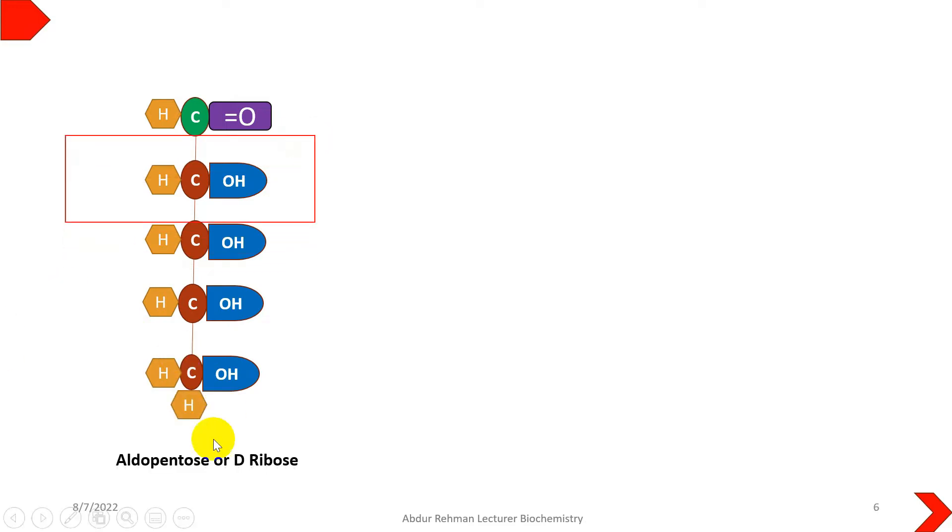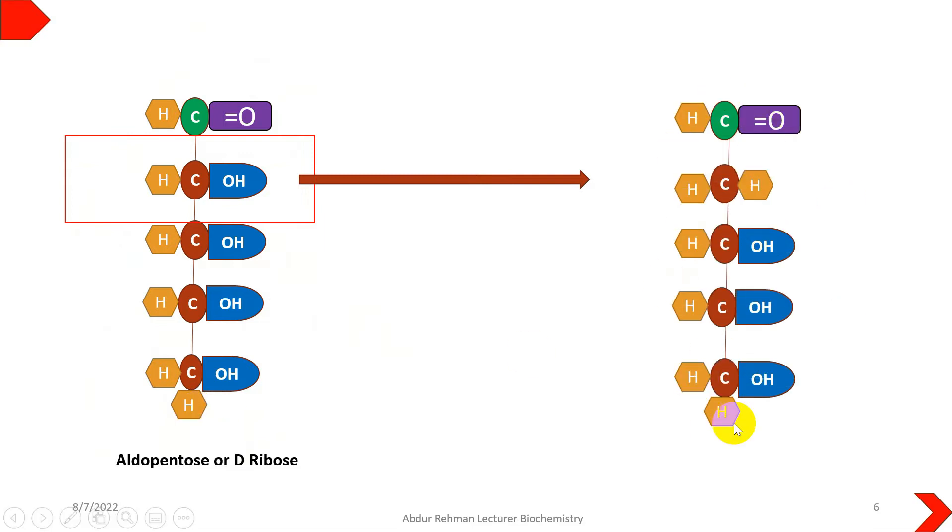It is biologically very significant because ribose is part of RNA structure while deoxyribose is part of DNA structure. You can't ignore its importance when it comes to the function of carbohydrates.